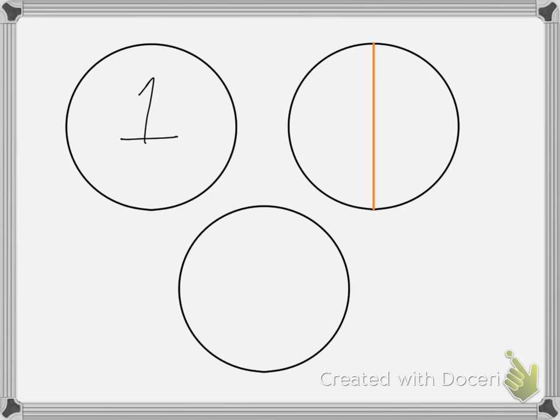So how many equal pieces do I have? Well, I have two equal pieces, and remember, we call each piece one half of the whole. We can also write one half like this, one half.